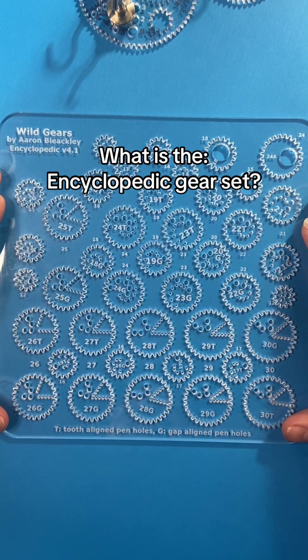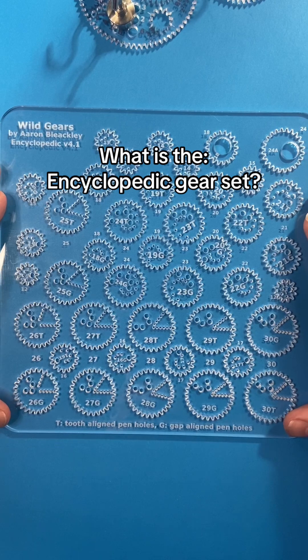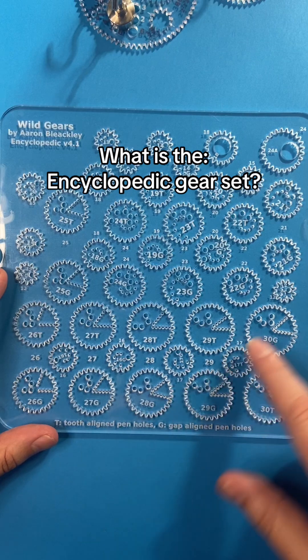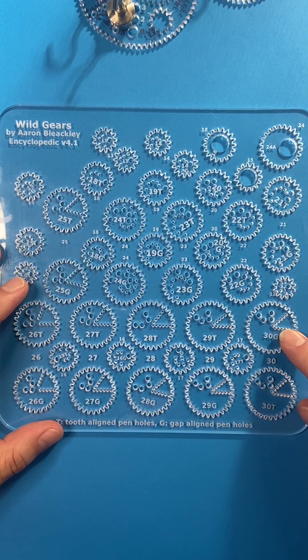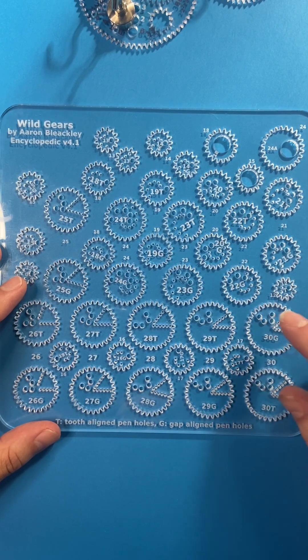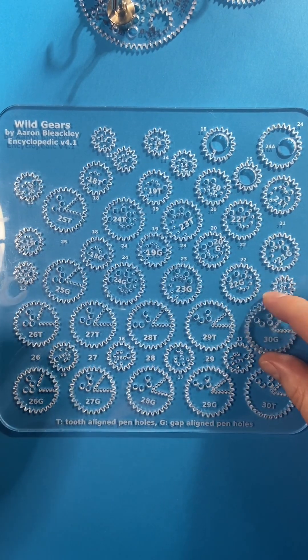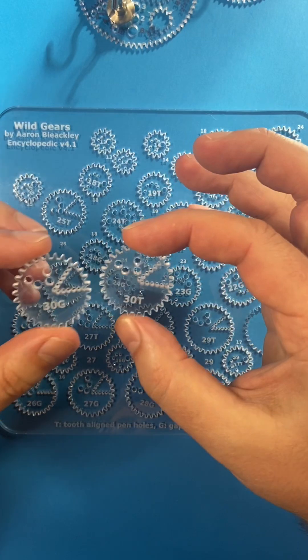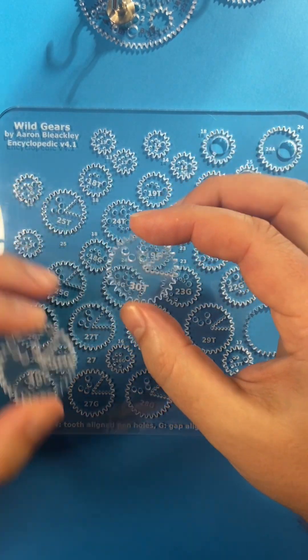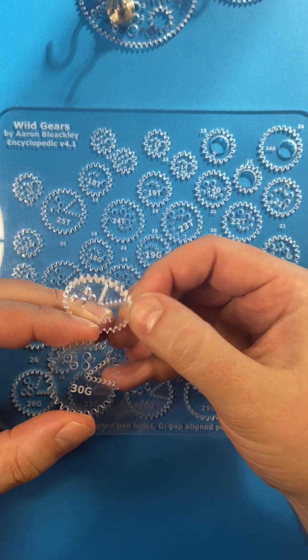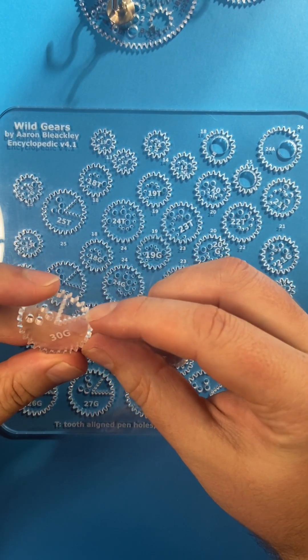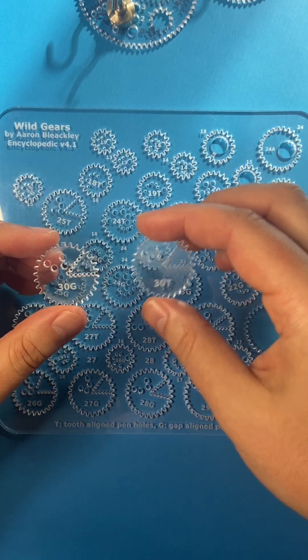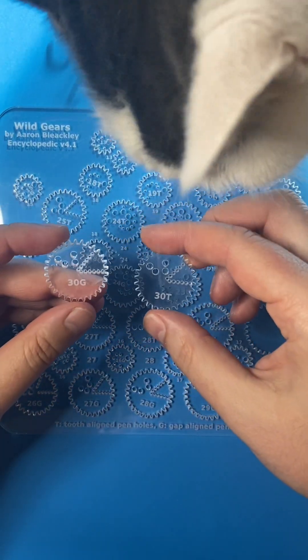What is the encyclopedic gear set and why is it special? It's got all the gears from 12 to 30, at least two copies of each. There's a G gear and a T gear and they're identical except the T has all the pen holes aligned with the gear tooth and the G version has all the pen holes aligned with the gap. And so this is useful for a bunch of things. You can do a lot of neat things with this.